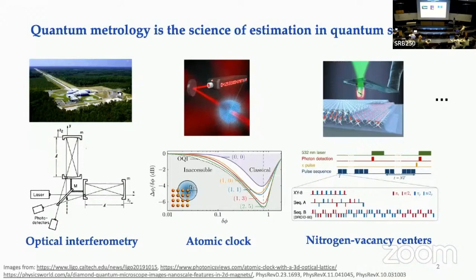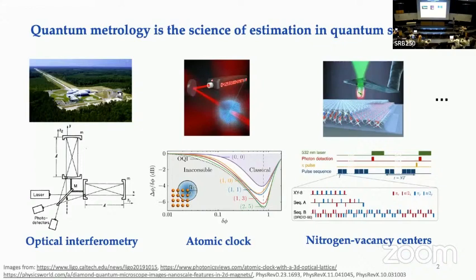The first example is optical interferometry. You have an unknown parameter in your quantum system, which is the difference between two optical paths, and you try to use interferometry to estimate the phase difference. The second example is an atomic clock, where the unknown parameter is the laser frequency, and you try to use a bunch of qubits or atoms to sense how large the laser frequency is.